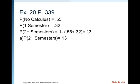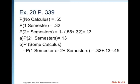B, some calculus. Well, some calculus means one semester or two or more semesters. Those are disjoint events. You fall into one category or the other. So we can add those together. 0.32 plus 0.13 is equal to 0.45.